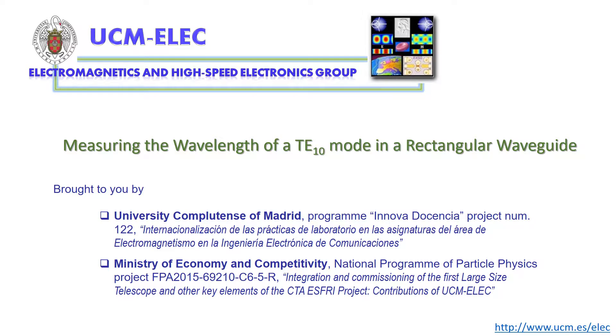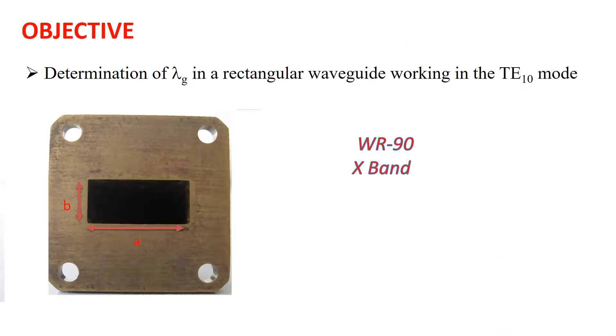In this presentation, we saw the procedure to determine the wavelength in a rectangular waveguide working in the dominant mode. In particular, we used a WR90 waveguide working in the TE10 mode.